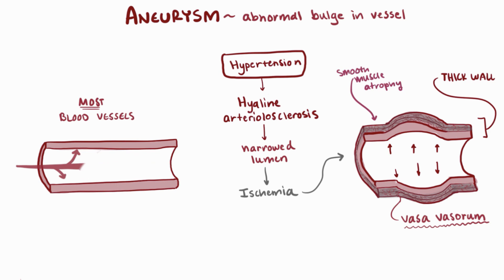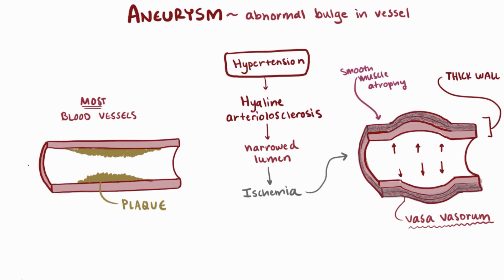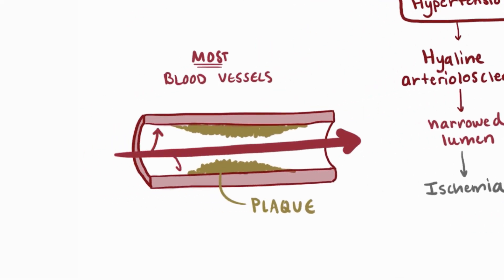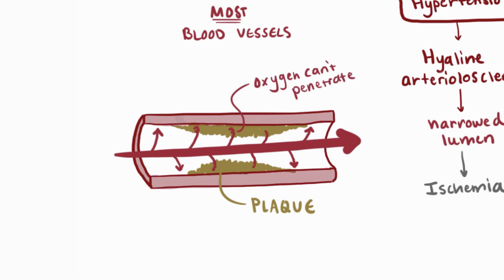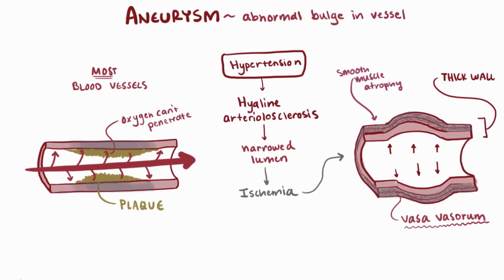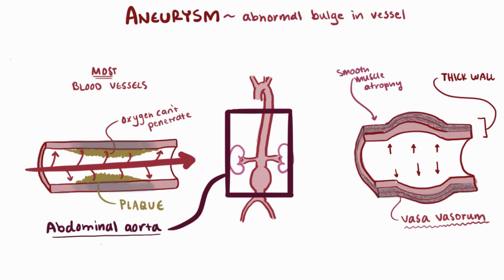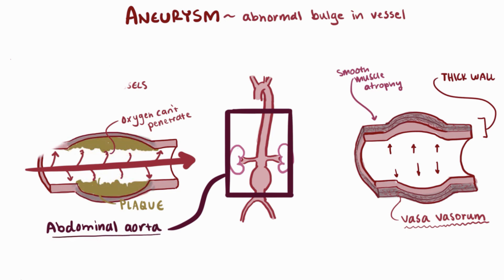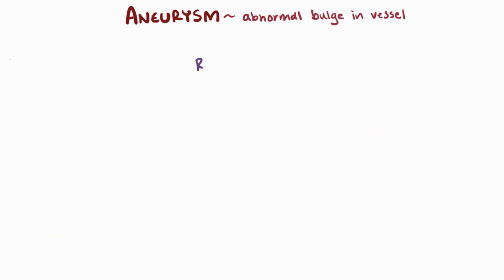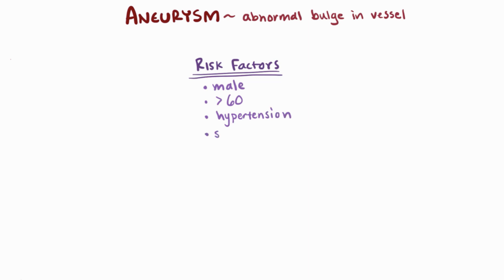The same thing can happen in blood vessels without vasa vasorum if plaque builds up on the tunica intima due to atherosclerosis — oxygen just can't penetrate all the layers of the wall. This type of aneurysm is often seen in the abdominal aorta. It's no wonder, then, that aneurysms and atherosclerosis share similar risk factors: people who are male, over the age of 60, and who have hypertension and smoke.